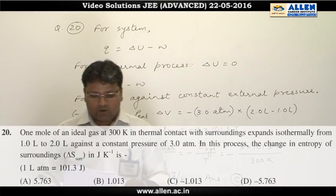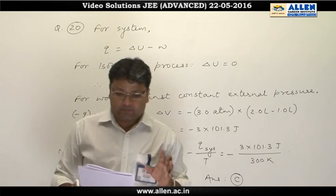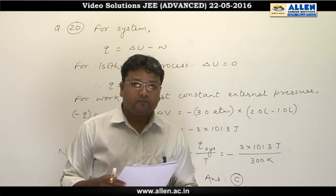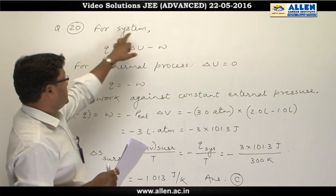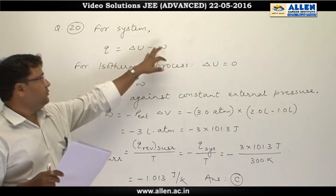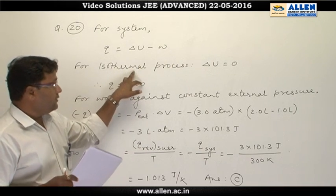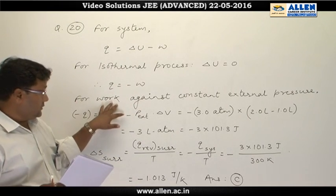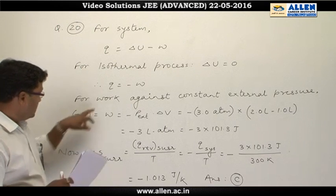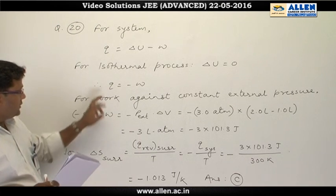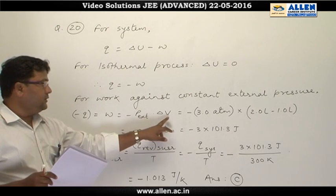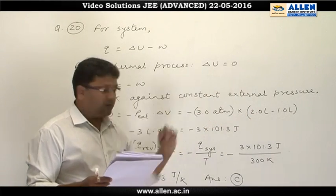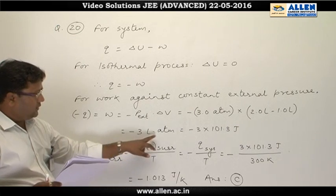Question number 20. One mole of an ideal gas is expanded against a constant external pressure, and we have to find the ΔS of the surroundings. For the system, the first law may be written as q = ΔU − w. As the process is isothermal, ΔU must be equal to 0, hence q is equal to −w. As work is done against constant external pressure, w equals −P_external × ΔV. The external pressure is 380 mmHg and the final minus initial volume gives ΔV, making this value equal to −3 liter·atmosphere.